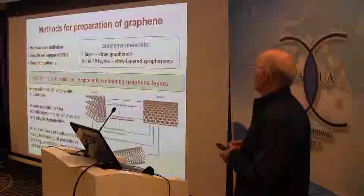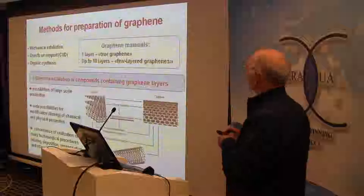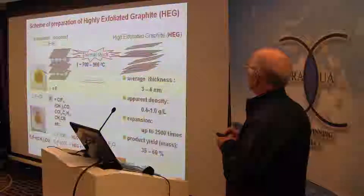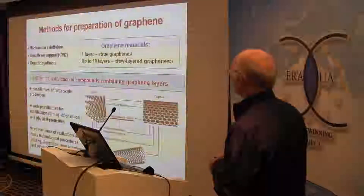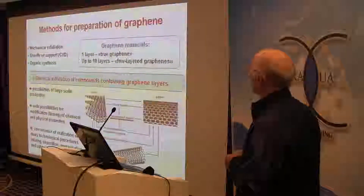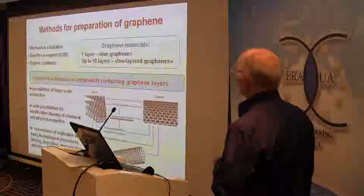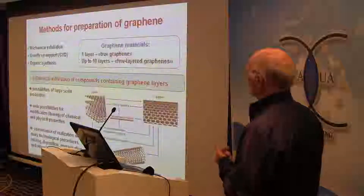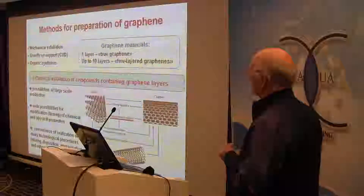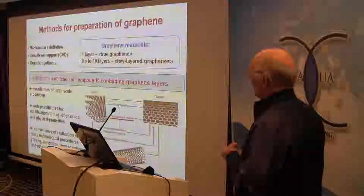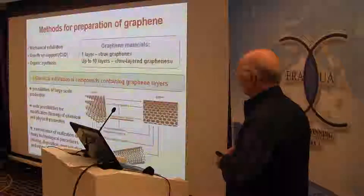Methods for preparation of graphene materials are different. For example, mechanical exfoliation is one approach. In our laboratory we developed a chemical exfoliation method, and this method has some advantages which can be used for large-scale production of graphene materials.